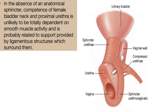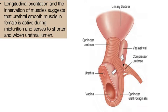In the absence of an anatomical sphincter, competence of the female bladder neck and proximal urethra is unlikely to be totally dependent on smooth muscle activity and is probably related to support provided by ligamentous structures surrounding them. The longitudinal orientation and innervation of the muscle suggests that urethral smooth muscle cells in the female are active during micturition and serve to shorten and widen the urethral lumen.